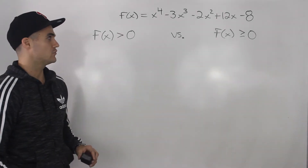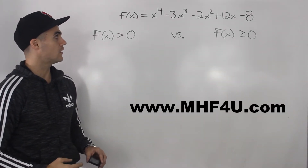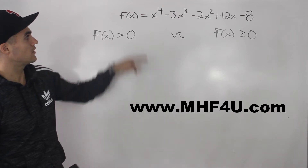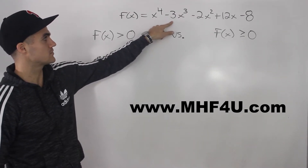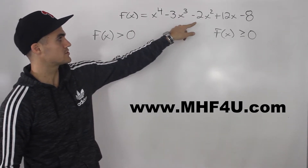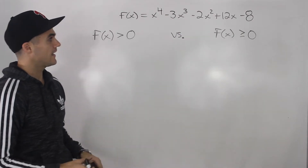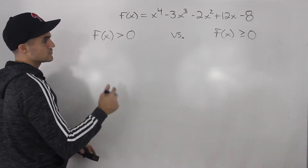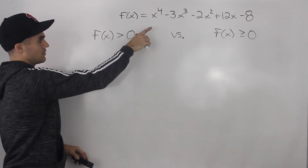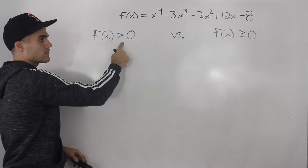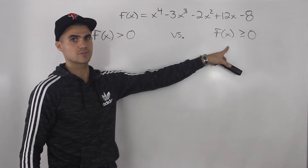Welcome back. Moving on to another polynomial inequality example. We have this polynomial f of x: x to the 4 minus 3x cubed minus 2x squared plus 12x minus 8. We have to solve two inequalities — when is this polynomial greater than 0, and when is it greater than or equal to 0?